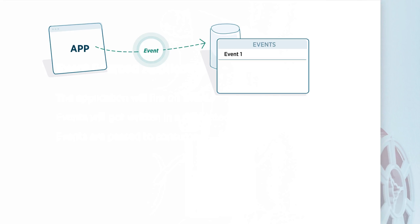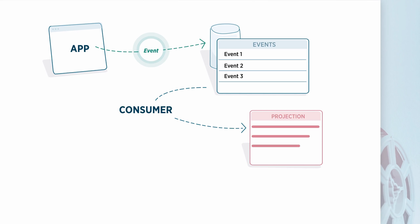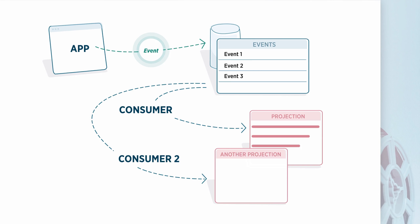In schema form: our application wants to do something, it sends out an event, we write that event into the database, and as new events come in, we write those as well. Those events get passed to a consumer. One type of consumer is a projector — it transforms those events into a format useful for the application, which we call a projection. We can have multiple consumers each creating their own projection. When new events come in, projectors don't need to replay all events; they just handle the latest event and update their projection.